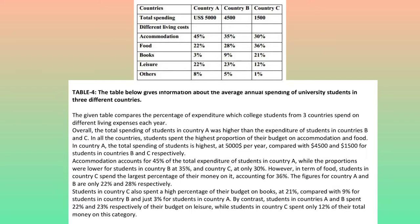However, in terms of food, students in Country C spend the largest percentage of their money on it, accounting for 36%. The figures for Countries A and B are only 22% and 28% respectively. Students in Country C also spent a high percentage of their budget on books at 21%, compared with 9% for students in Country B and just 3% for students in Country A.